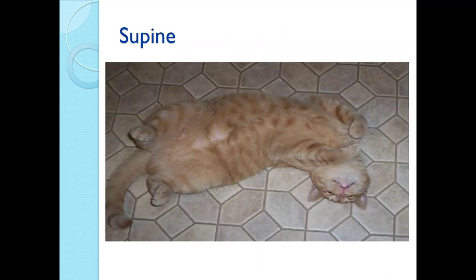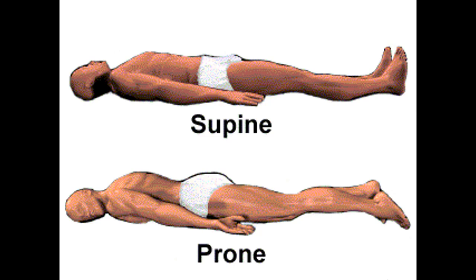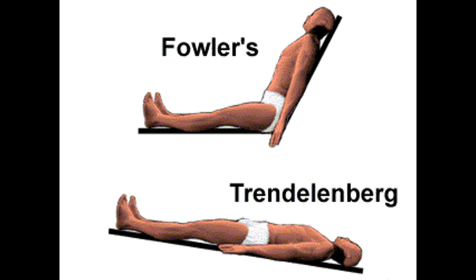Supine position is lying flat on the back. Prone is the opposite — lying face down on the abdomen. Fowler's position has the head of the bed at a 90-degree angle. Semi-Fowler's is at 30 degrees, sometimes described as 30 to 45 degrees. Trendelenburg position has the feet angled up higher than the head. Reverse Trendelenburg is the opposite, with the head of the bed angled upward and the feet angled downward.